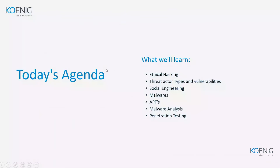Today's agenda includes: what is ethical hacking and how it differs from hacking, the different processes and steps within those processes, the different types of attackers, what are vulnerabilities, social engineering, malware and types of malware, APTs (Advanced Persistent Threats), and finally malware analysis and penetration testing — including the types of malware analysis and how to perform penetration testing.